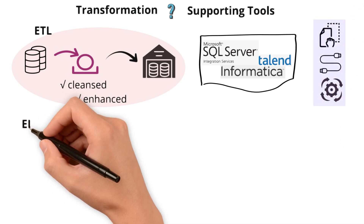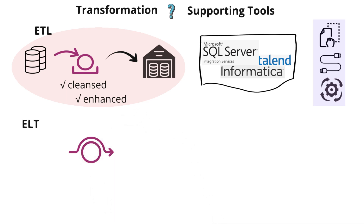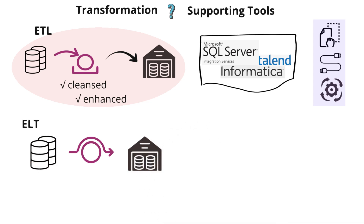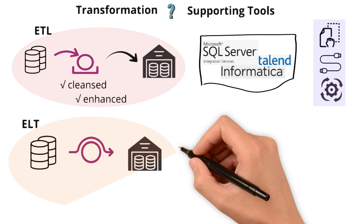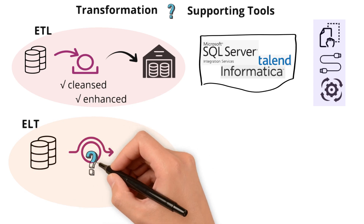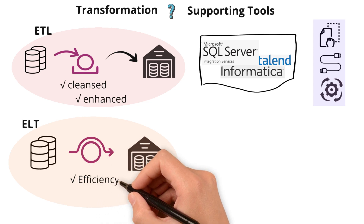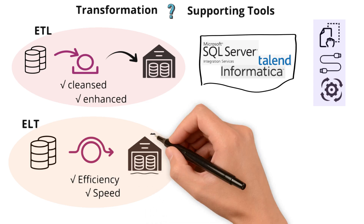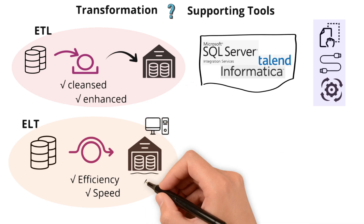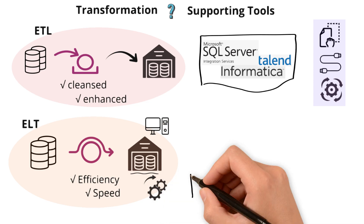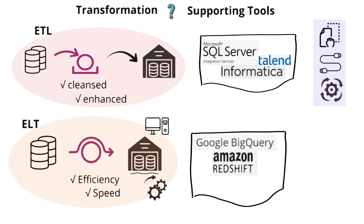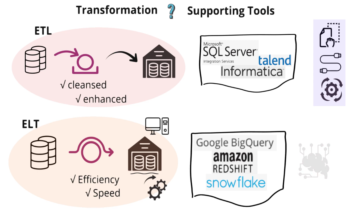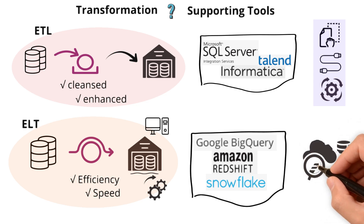In contrast, ELT bypasses the staging area entirely. Extracted data flows directly into the warehouse and is transformed there. Why skip the staging area? It's all about efficiency and speed. By loading data directly into the data warehouse, ELT takes advantage of the warehouse's robust computing power to transform the data on the spot. Tools such as Google BigQuery, Amazon Redshift, and Snowflake allow complex transformations on large datasets where they reside, making it possible to manage and analyze data at scale with agility.